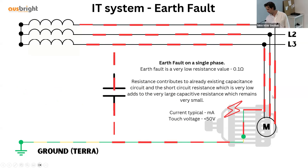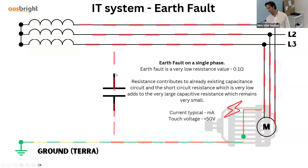We've now had an Earth fault between line three and Earth, shown here. Because you have a very large impedance value from the capacitive insulation resistance, this adds to the fault path, and you'll have a very small current flowing. The low impedance path remains through the plant, and the plant will continue to operate as normal. That is the main advantage of an IT earthing system — if you have an Earth fault, the system will continue to function.